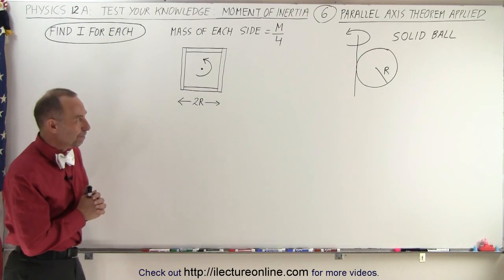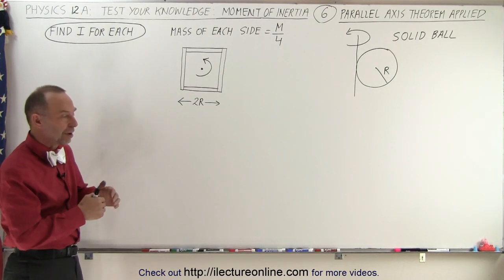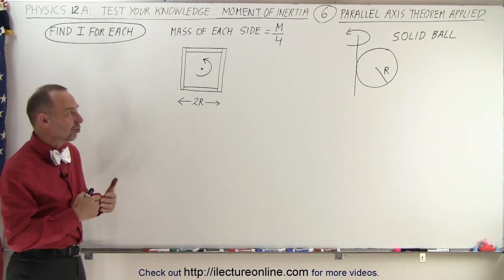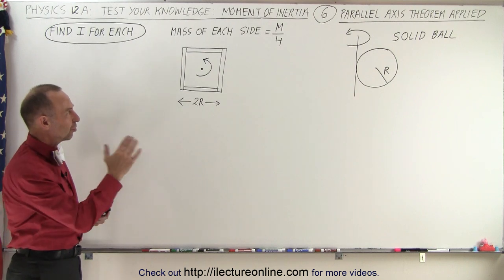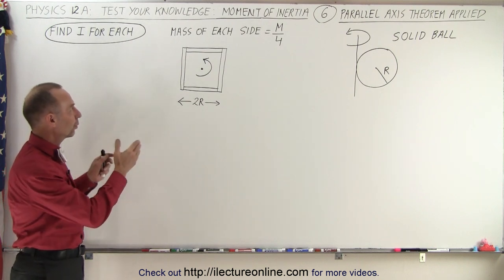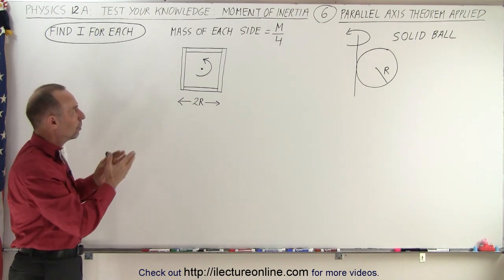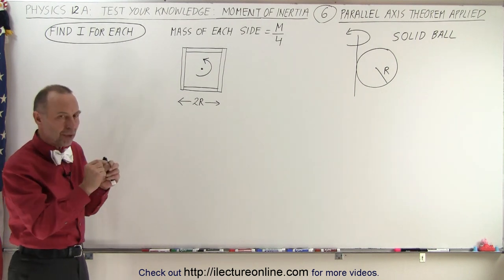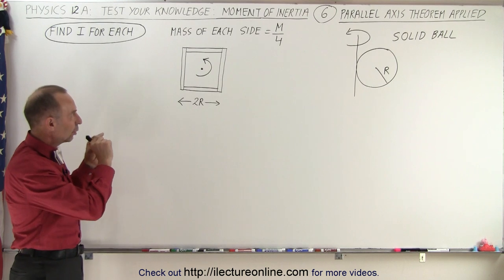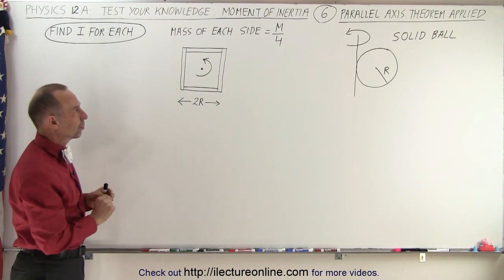Welcome to Electron Align. Here we have two different geometric figures. One is a solid ball, the other one is a hollow box, and the box is made of thin long strips.